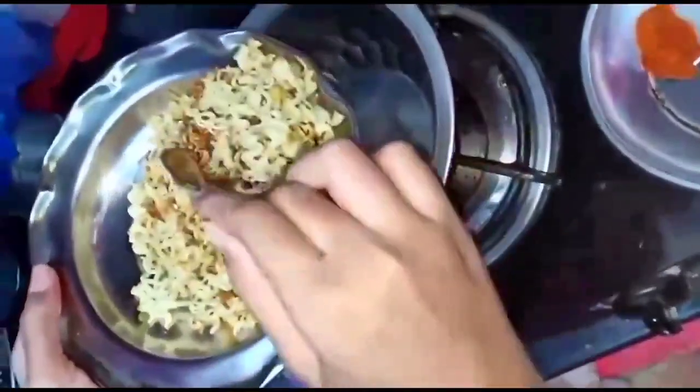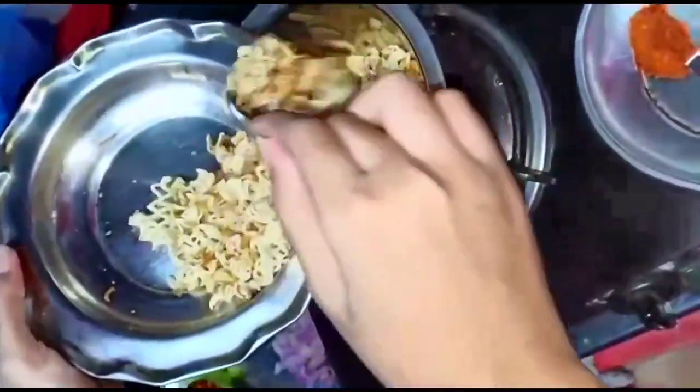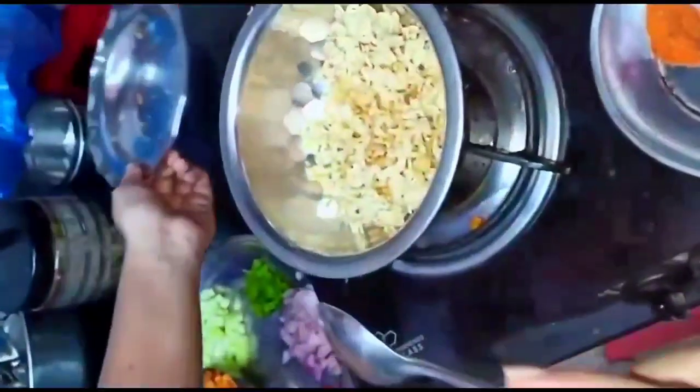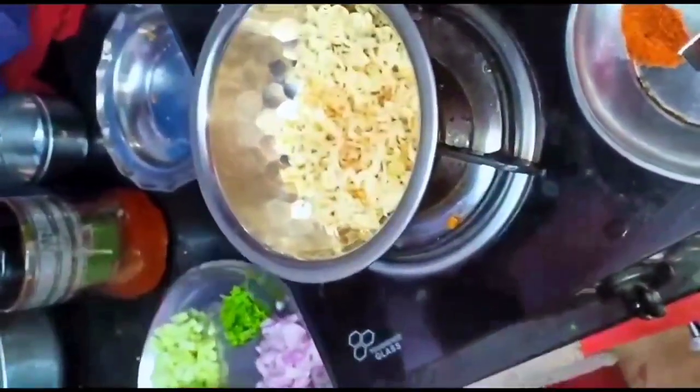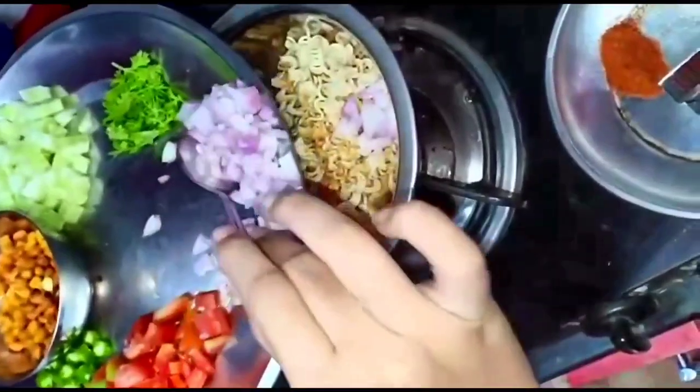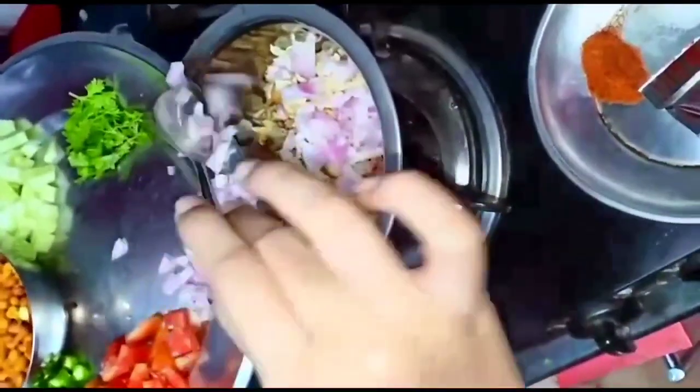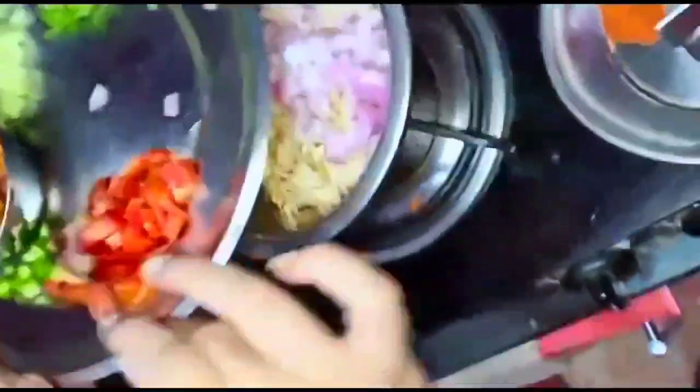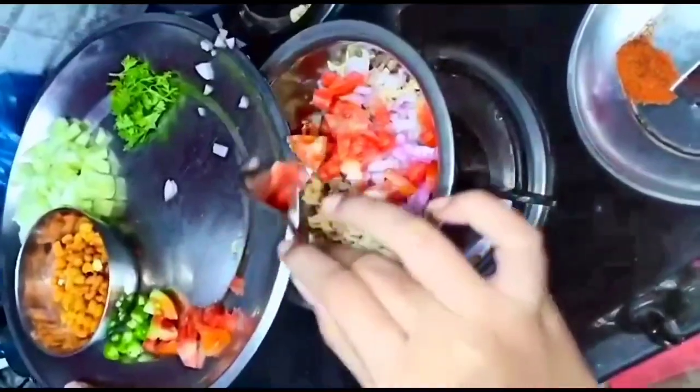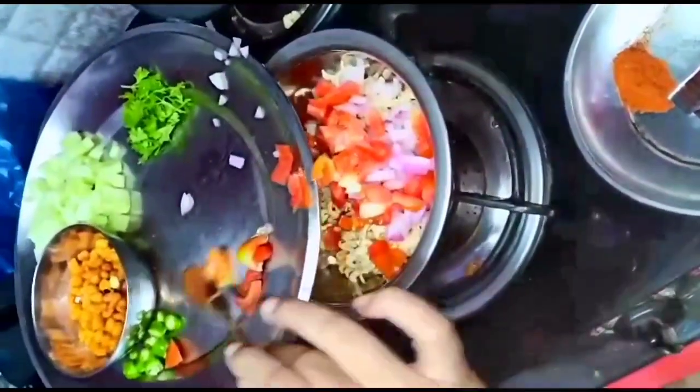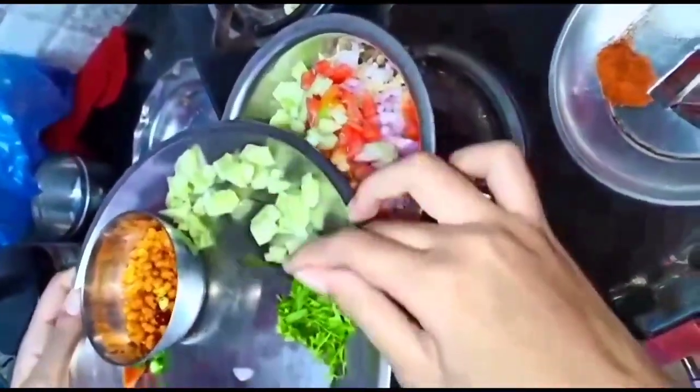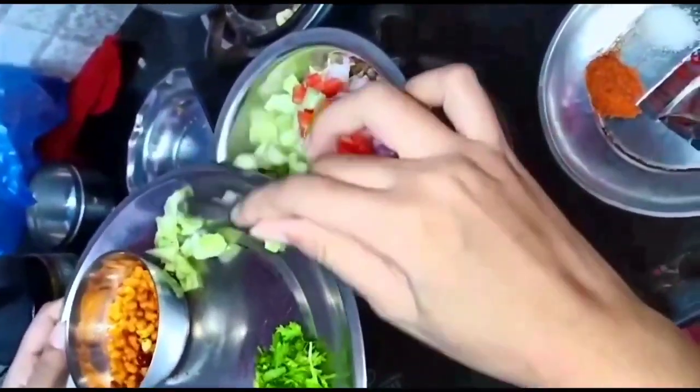Firstly, add roasted Maggi in the bowl. Then add onion, tomatoes, cucumber, and coriander.